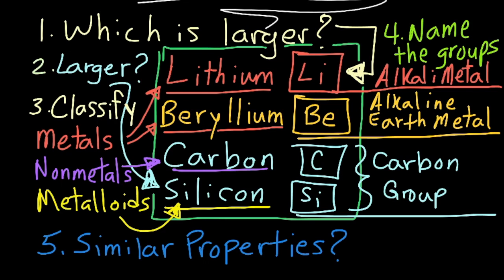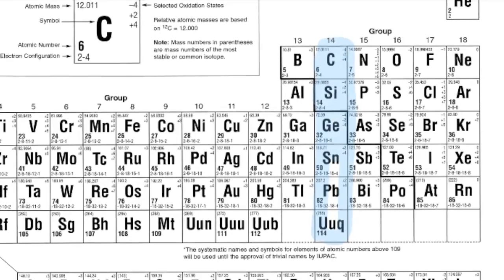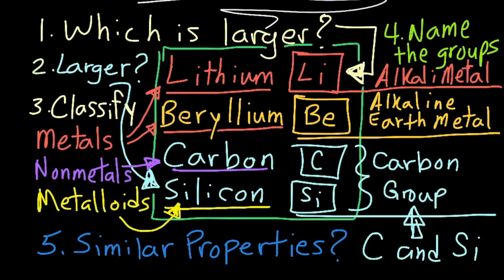Number five, which two elements will have similar properties? Carbon and silicon are in the same group, so they will have similar properties.